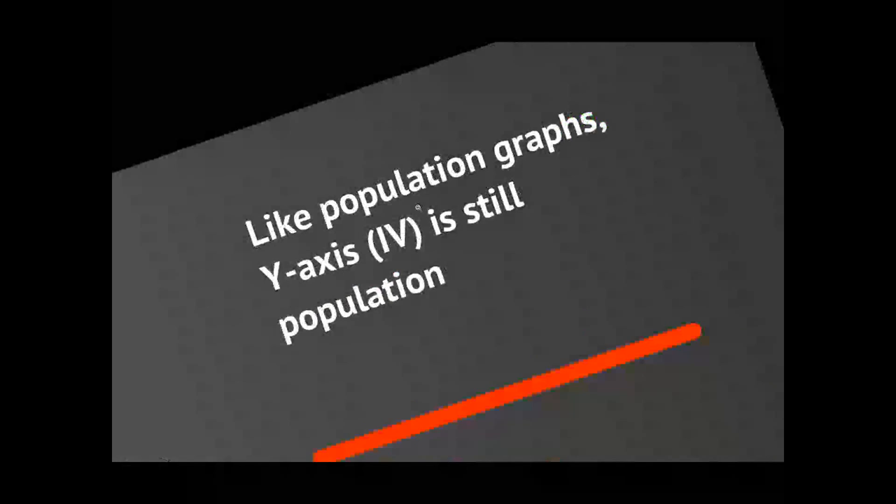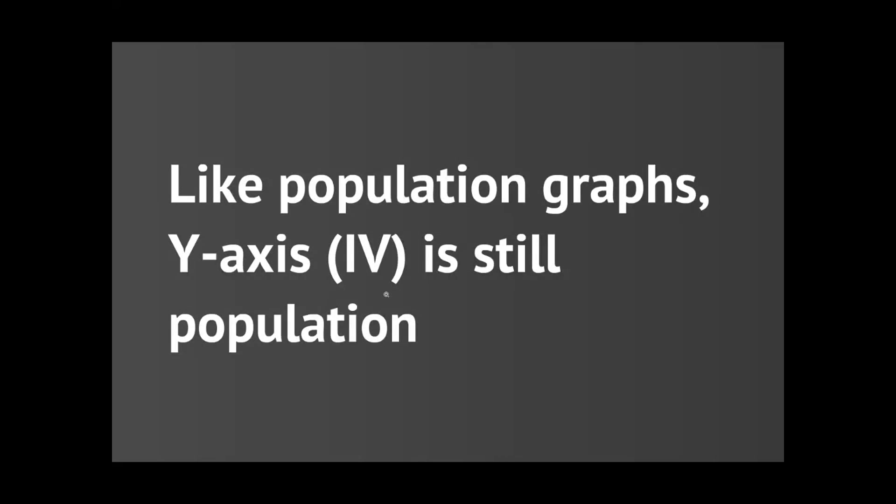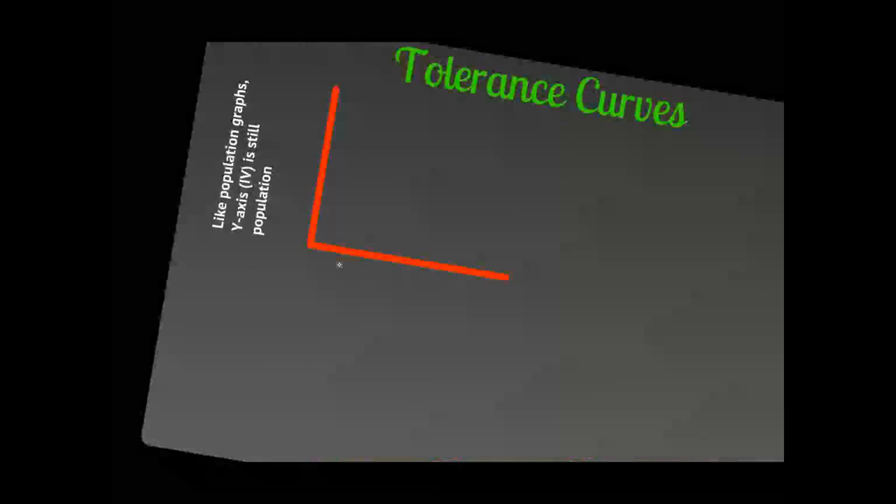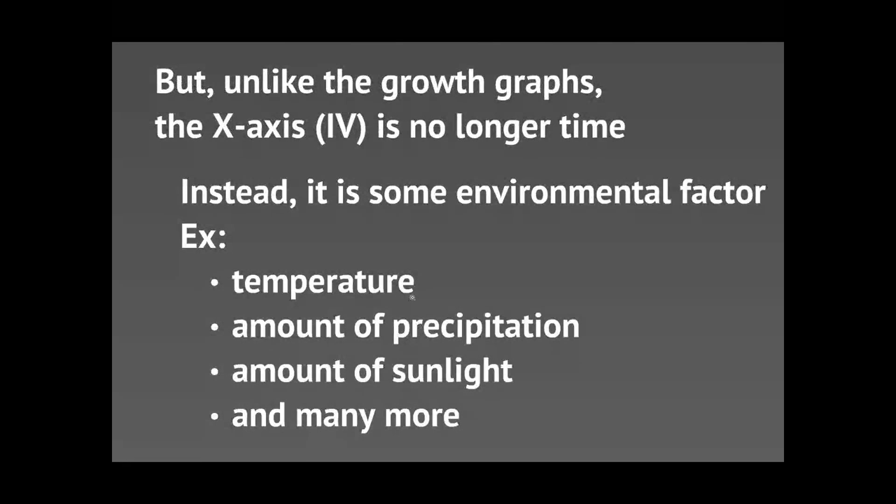Today we're going to take a look at a graph called the tolerance curve. Just like our population graphs, the y-axis is still going to be population. So we're still going to be charting the growth of a population. The only difference is we're not going to be tracking the growth of a population over time. We're going to change that x-axis and instead it's going to be an environmental factor.